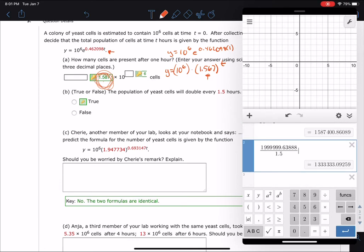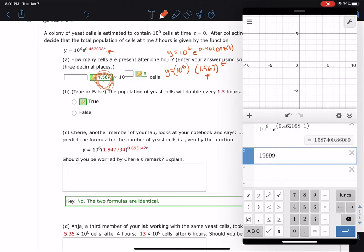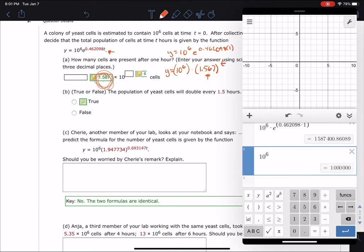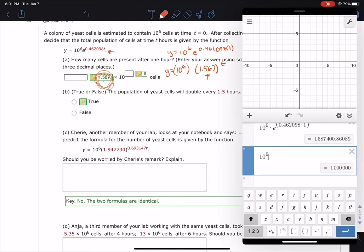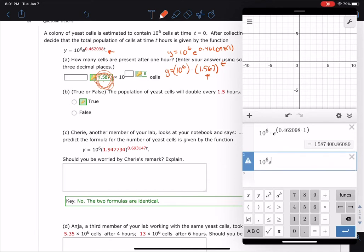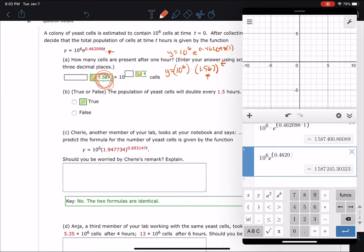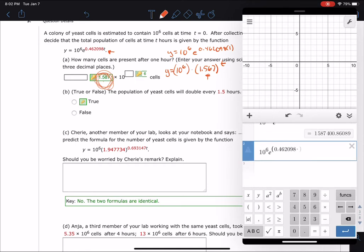10 to the 6th times E raised to the parentheses 0.462098 times 1.5. So that's how much of that happen after 1.5 hours. Okay. So then does it double every 1.5 hours?